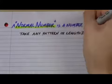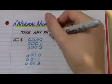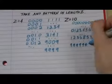A normal number is a number where, if you take any pattern of length Z, you'll definitely find the pattern there, and others that length with same frequency.